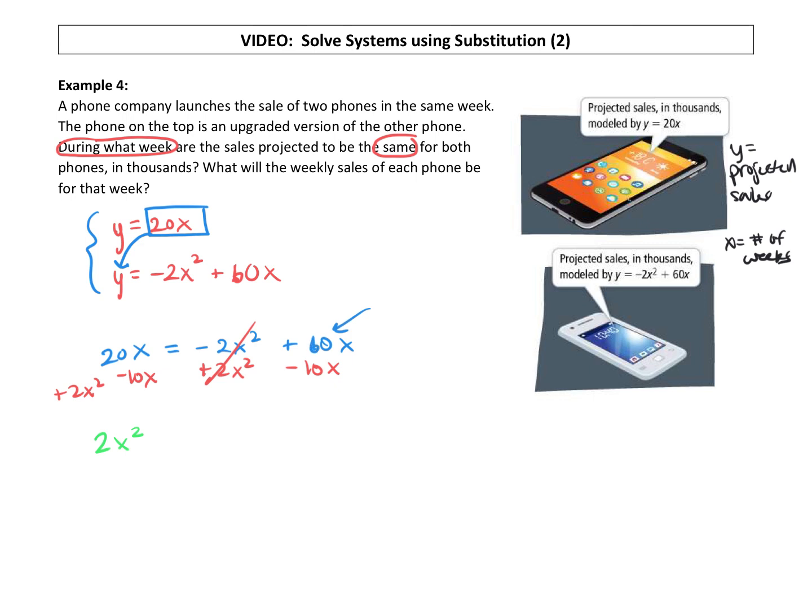Maybe I looked at that and saw a 10. So we are actually going to subtract a 60x from both sides. All right. So 20x minus 60x is a negative 40x equals zero.